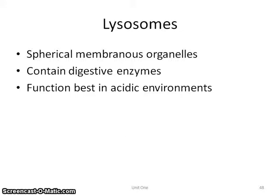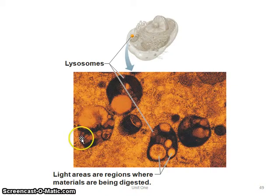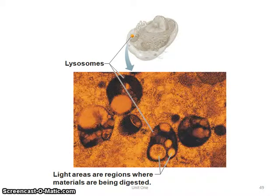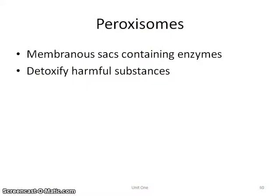Lysosomes are good for digesting enzymes, and you can kind of tell they look like they're gobbling things up — that's where the materials are being digested. Peroxisomes are very similar; they contain enzymes as well, but their most important job is to detoxify or get rid of harmful things.